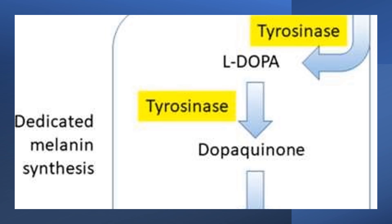One of the metabolic fates of tyrosine is giving melanin pigment, which is produced in melanocytes. Melanin gives our skin its dark color. It is the strongest natural antioxidant — being dark-skinned is a gift because it protects your body against the harmful effects of UV radiation. Being an antioxidant also means it is anti-cancer.